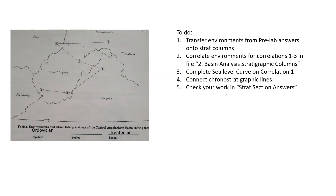Then you can check your work. I gave you a file called strat section answers — go through and make sure what you have broadly agrees with what I have. It doesn't have to be exactly the same; there is no perfect right answer you can infer just from reading strat columns. Now, location 1 is in Pennsylvania and location 2 is in southeastern Ohio, with locations three through six also in that region — you'll find those on correlations two and three.